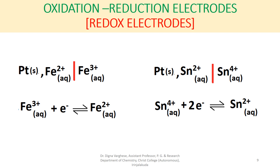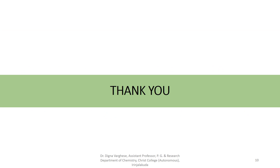These are the three types of reversible electrodes: reversible with respect to cations, reversible with respect to anions, and redox electrodes. With this, I conclude. Thank you.